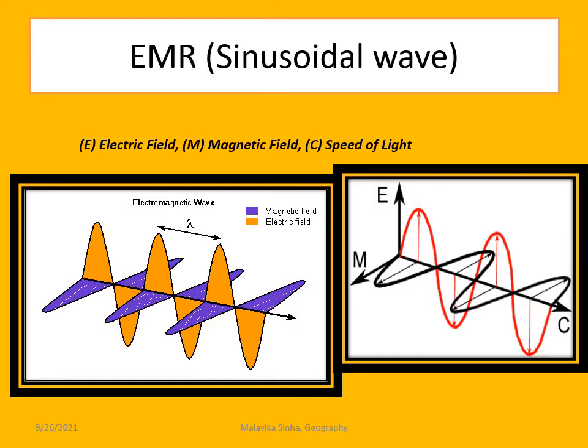EMR is a sinusoidal wave. The magnetic field and electric field are described by two colored components, and the arrows show the distance or the direction of propagation.